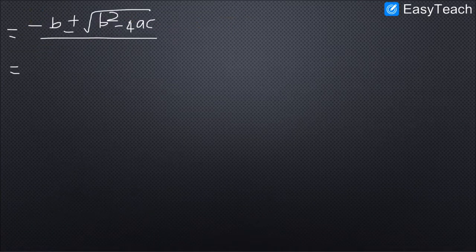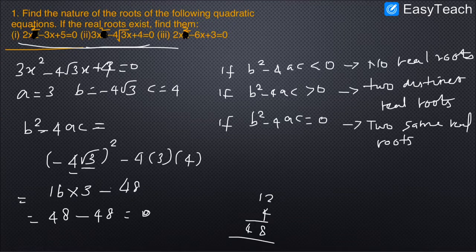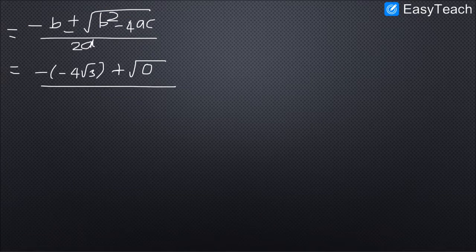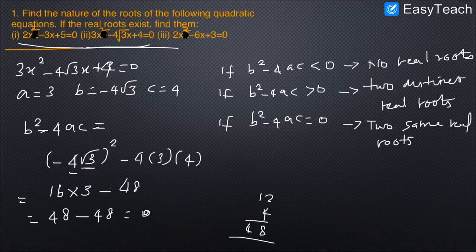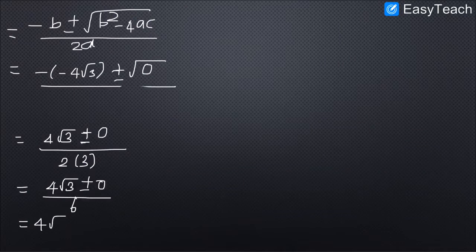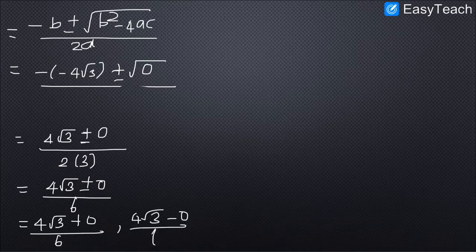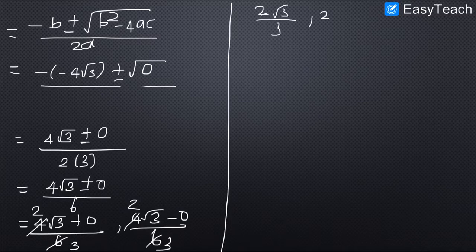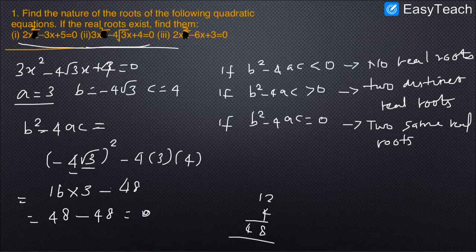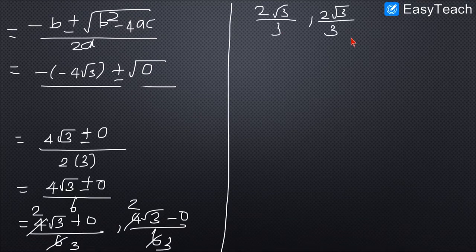Applying the quadratic formula: x = (-(-4√3) ± √0) / (2×3) = (4√3 ± 0) / 6. Simplifying, both solutions give 2√3/3. Since the discriminant is 0, we get two identical solutions: x = 2√3/3 and x = 2√3/3.